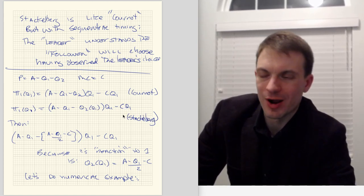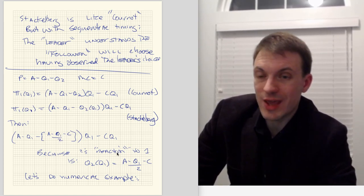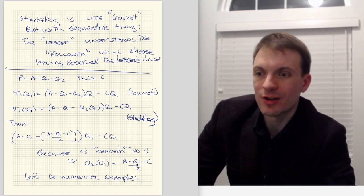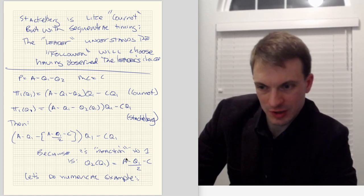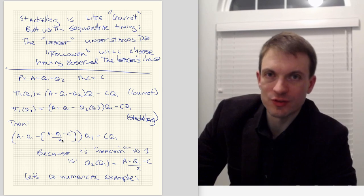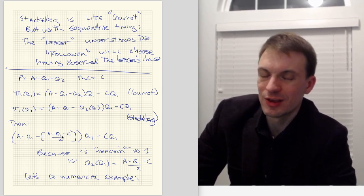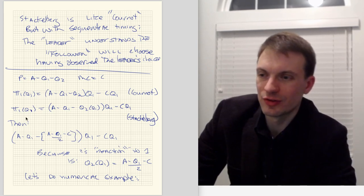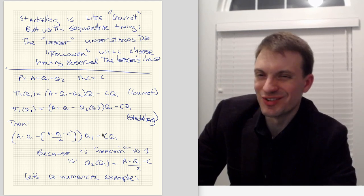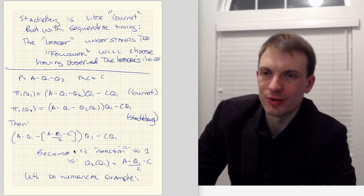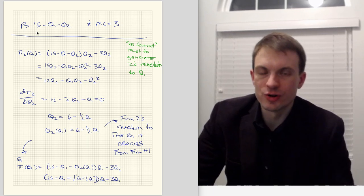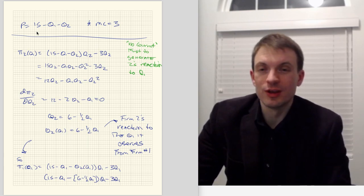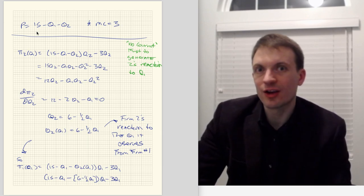Let's go ahead and do a numerical example. Assume the inverse demand is P = 15 minus Q1 minus Q2, with marginal cost of 3. The first thing I'm going to do is solve the Cournot problem to generate Firm 2's reaction to Firm 1's choice. This isn't Stackelberg yet — when I do Stackelberg, the follower's choice has to enter as a function into the leader's profit. So we need to figure out Firm 2's best response function first.